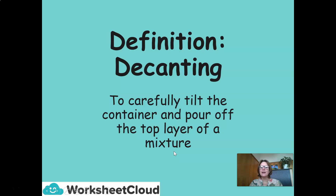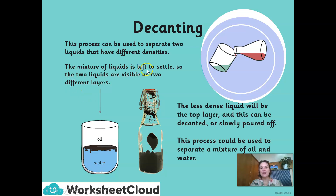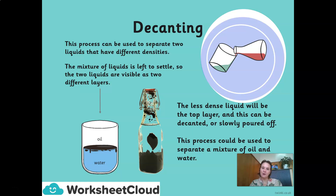Decanting is to carefully tilt the container and pour off the top layer of a mixture. This process can be used to separate two liquids that have different densities, like oil and water. The mixture is left to settle so that the two liquids form visible separate layers. Oil floats on top and water is at the bottom — the less dense liquid forms the top layer. That top layer can then be decanted or slowly poured off. This process is used to separate a mixture of oil and water.